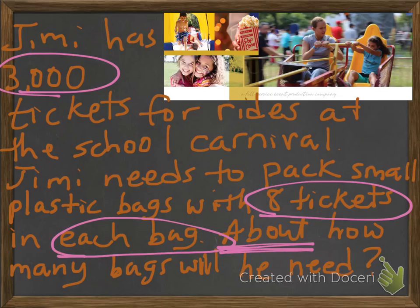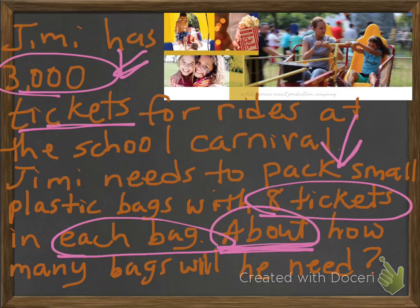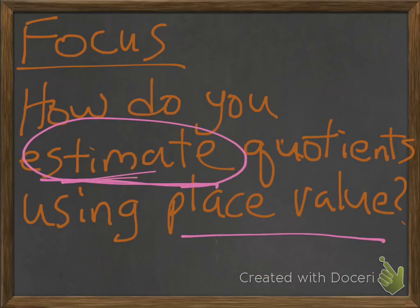So we are going to start off with 3,000 tickets. We have 3,000 tickets and we want to get them into 8 tickets in each bag. The key word here is about, which lets us know just what our focus is. We are going to estimate.